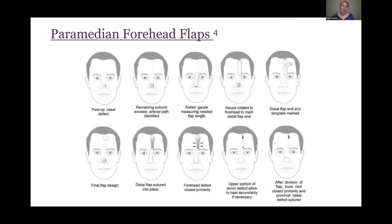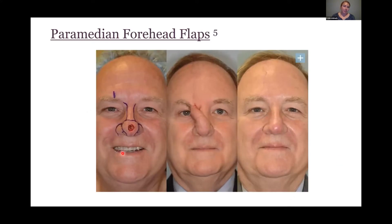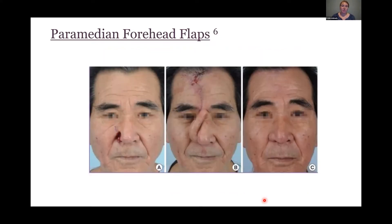I'd like to state as a warning: the next slides contain graphic images of a paramedian forehead flap in a real patient. Here you can see a patient who had a nasal tip defect. In the middle image, you can see partway through the procedure where they created a paramedian forehead flap and covered the defect, along with the scar from the forehead. In the final picture, this patient had a great outcome—the nose looks perfectly normal, with only a tiny scar on his forehead. This additional example shows a different defect: a patient had a nasal ala defect, and he also had a pretty good outcome. You can hardly tell he had a facial procedure.